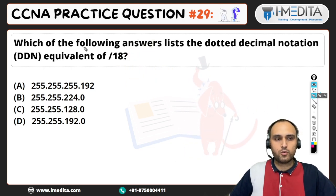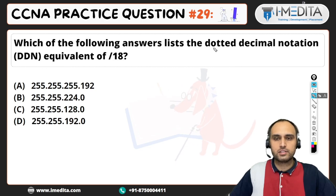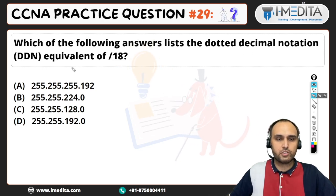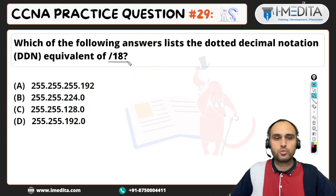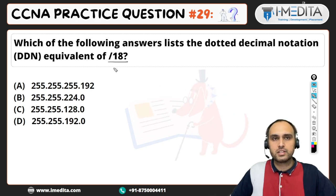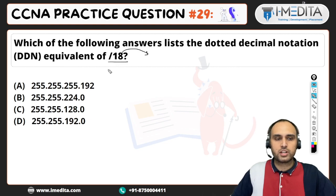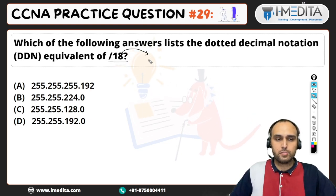What's the question saying here? Which of the following answer lists the dotted decimal notation equivalent of slash 18? So basically, we have a subnet mask here in CIDR notation or slash notation, and this is asking the respective dotted decimal notation.